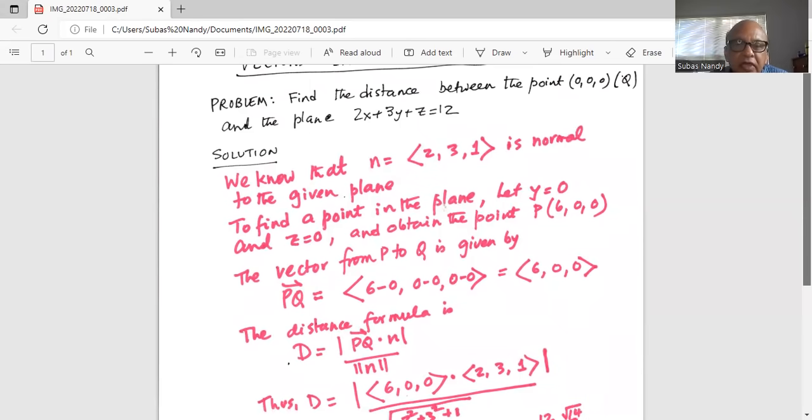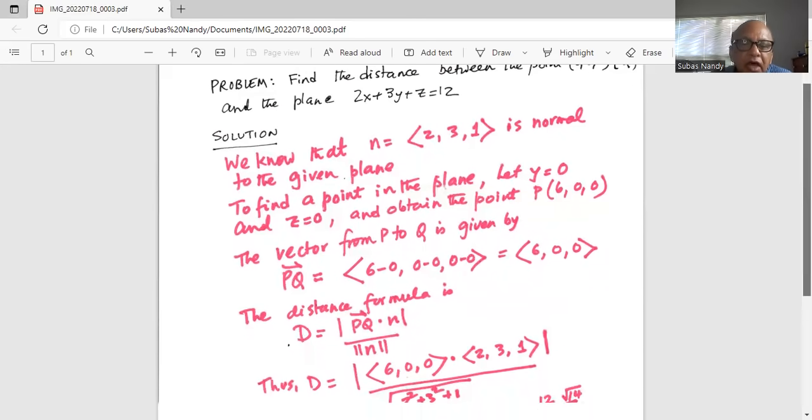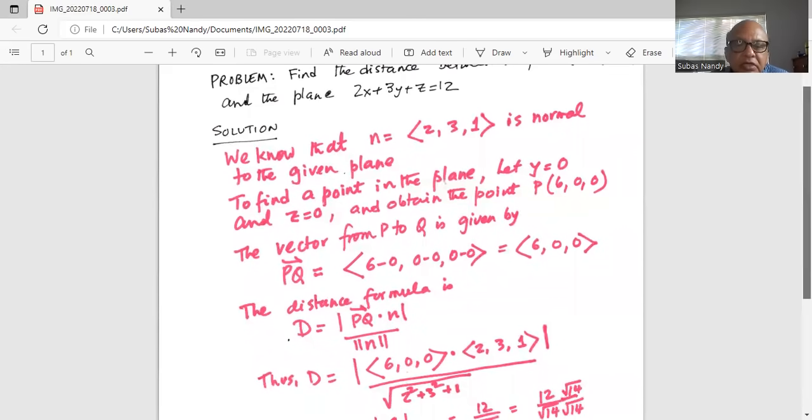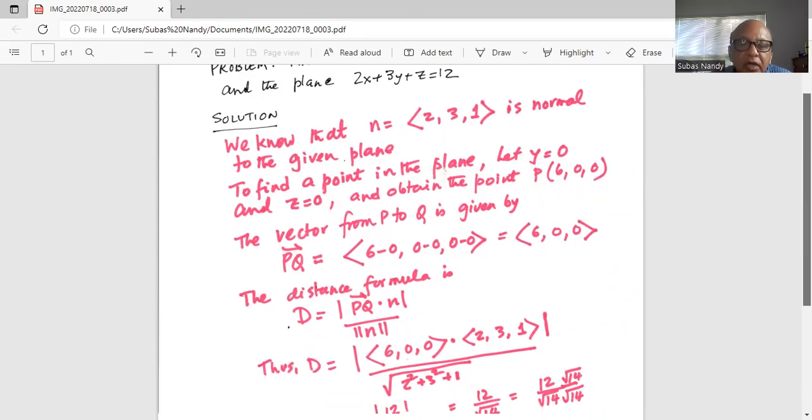So n we already know is a vector with direction number 2, 3, and 1. And PQ is a vector with direction number 6, 0, 0, that is dot product with 2, 3, 1, divided by the magnitude of n, which is square root of 2 square plus 3 square plus 1.